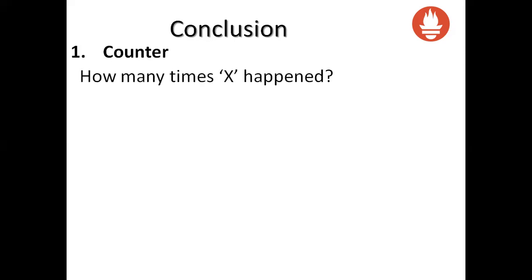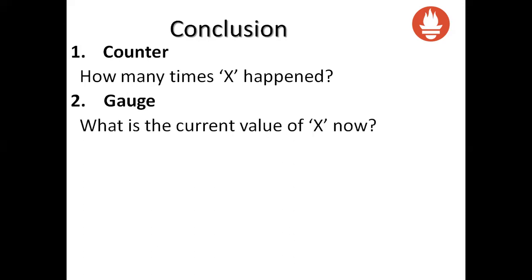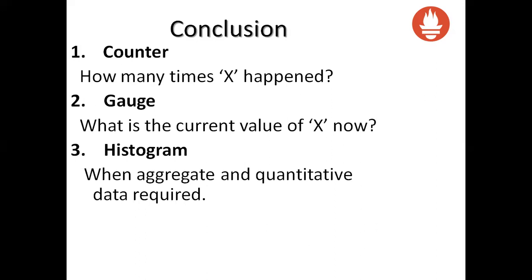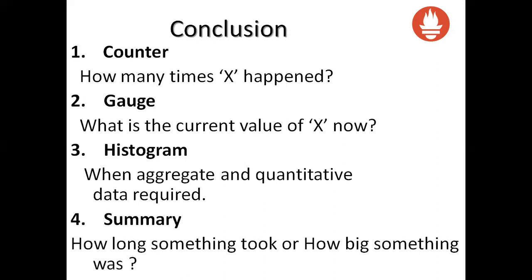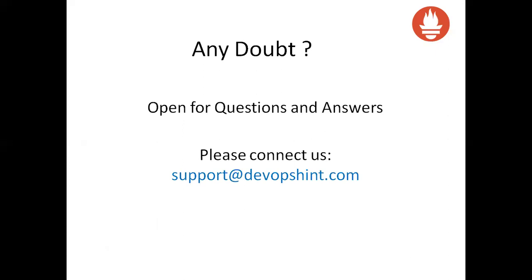In summary, when to use which type of metric: use counter when you have a problem of 'how many times did X happen.' Use gauge when you want to know 'what is the current instantaneous value of X.' Use histogram when you want to calculate aggregates or need quantitative data distribution. Use summary when you want to know 'how long something took or how big something was.' If you have any doubts, you can contact us at support@devoxin.com. Thank you.